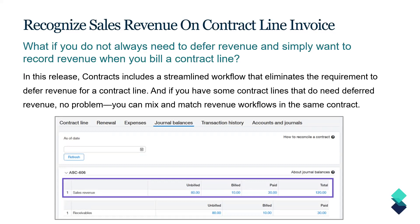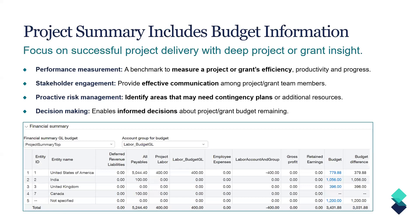Recognizing sales revenue on contract line invoices is a new feature. What if you don't always need to defer revenue on a contract and simply want to record the revenue when you bill the contract line? This brand new feature allows you to do so. It does require both rev rec and contracts modules. Sage has been working on the contracts module quite a bit release over release, and this is another one that will help streamline your workflow — you wouldn't have to create new contracts just to recognize revenue immediately. If you've had SaaS experience with ad hoc invoicing and setting up a revenue schedule for a quick one-off, that never felt like an efficiency gain — so this is a great addition.